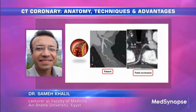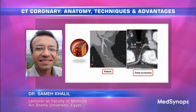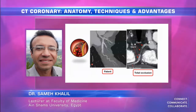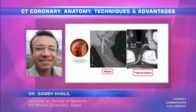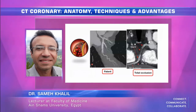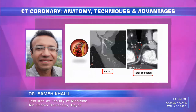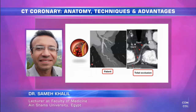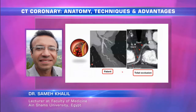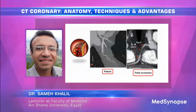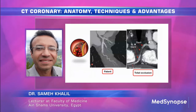This is an example of a patent stent, and this is a totally occluded stent with good distal runoff beyond the occlusion, flowing through coronary collateral connections.